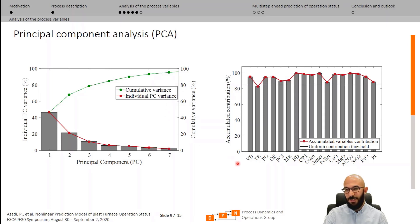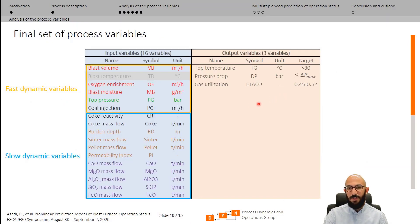Plotting the accumulated contribution of each input variable over the seven principal components shows that all input variables except blast temperature have contributions above the uniform contribution threshold, approving their importance for representation of the desired output variables. Leaving out blast temperature is also motivated by the fact that this variable is highly correlated with pulverized coal injection, which is already incorporated among the input variables. Therefore, leaving out blast temperature results in 16 input variables and 3 output variables.